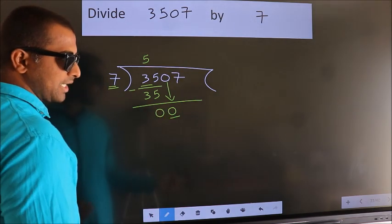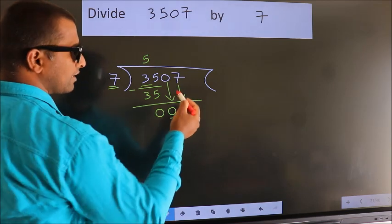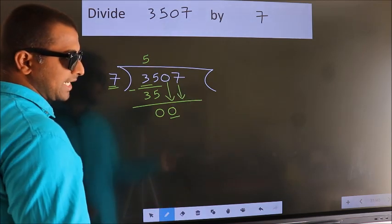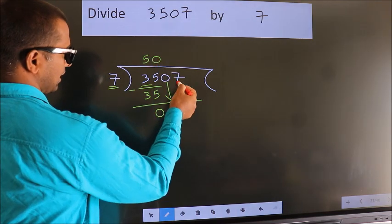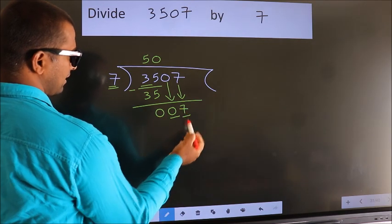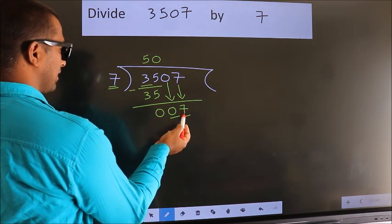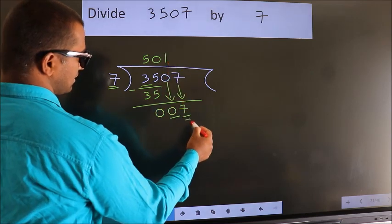So we should bring down the second number. And the rule to bring down the second number is put 0 here. Then only we can bring down this number. So 7. When do we get 7 in the 7 table? 7 once 7.